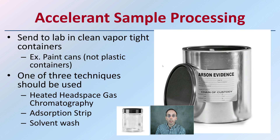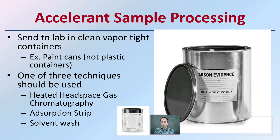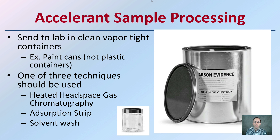For accelerant sample processing: when identifying if an accelerant was used, we want to send that to the lab in a clean, vapor-tight container. Typically paint cans are used, but not plastic containers — a glass jar can also be used. We want them to be vapor-tight so the accelerant doesn't evaporate between being recovered from the scene and entering the lab. One of three techniques are typically used: heated headspace gas chromatography, absorption strip, and solvent wash — which can help determine what accelerant was collected.